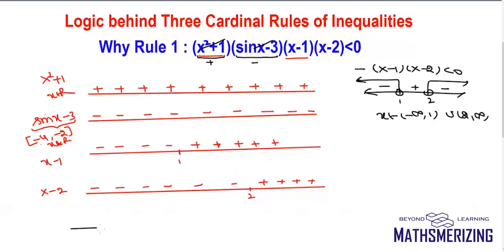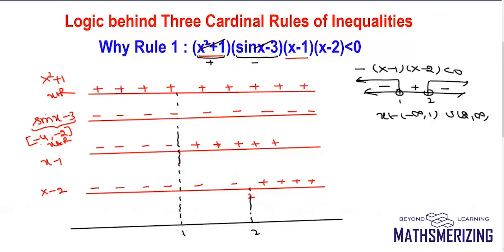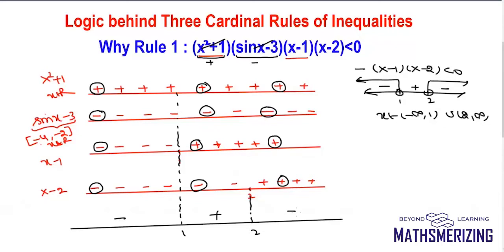I'll take a number line. The critical points are 1 and 2. When x is less than 1: positive, negative, negative, and negative — so plus into minus into minus into minus is minus. Between 1 and 2: plus into minus, plus into minus, which is plus. And then plus, minus, plus and plus, which is minus. So I get minus, plus, and minus.